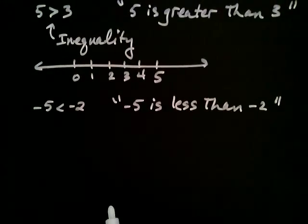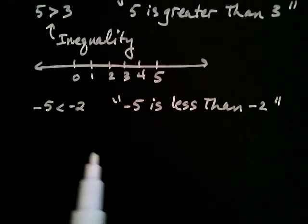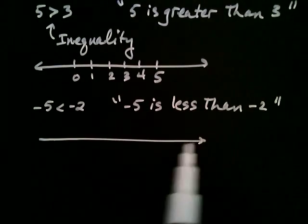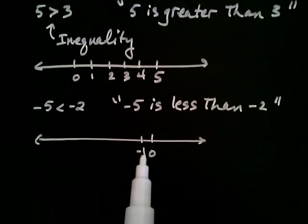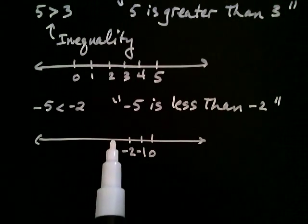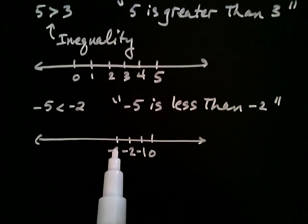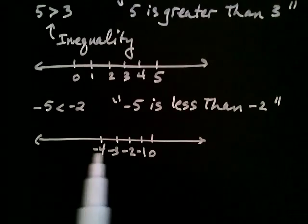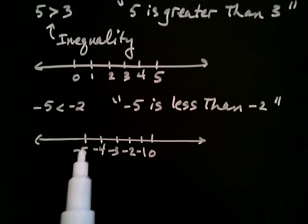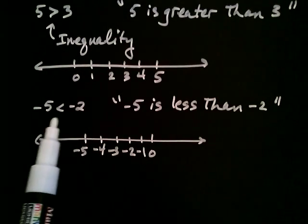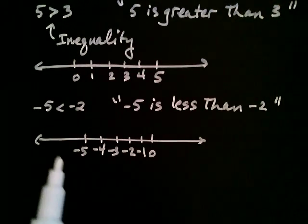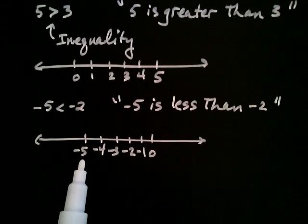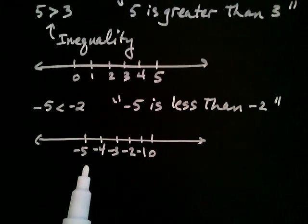On a number line, the way that's going to look is: here's zero, negative one, negative two, negative three, negative four, and negative five. Now if a number is less than another number, then this number is to the left of that number on the number line. That is, negative five is to the left of negative two on the number line, as I can see here.